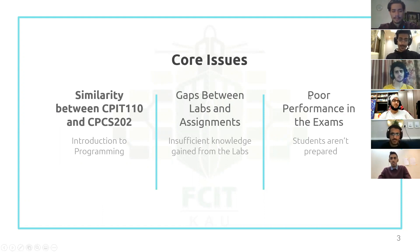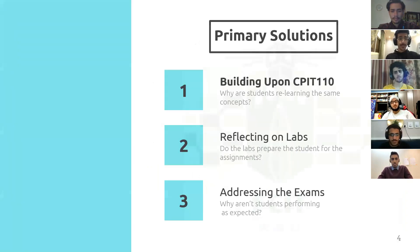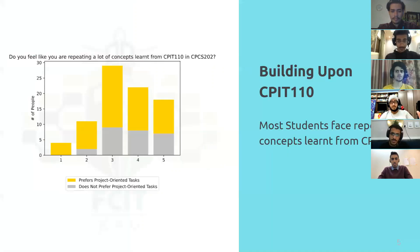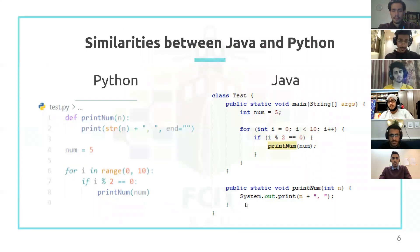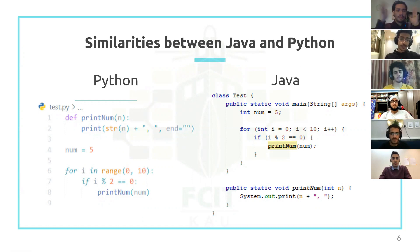The first main issue is the similarity between CBIT110 and CPCS202. We should build upon what we took in CBIT110. Most students find the concepts repetitive from CBIT110, and our survey confirms that. Students know the topics, but they don't know the relationship between Java and Python. We should show them the differences and make a smooth transition between the two languages.